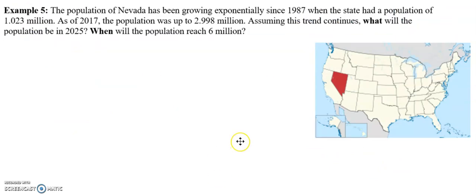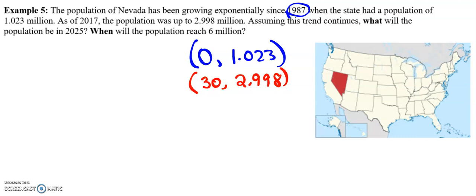Due to time constraints, we're going to set this one up, but then I'm going to do example six in a different video because that one is something called Newton's Law of Cooling, which is similar but slightly different. So let's pull out our important information about the population of Nevada. So 1987 is what I'm going to call time zero. We had a population of 1.23 million. As of 2017, which would be 30 years later, we're at 2.998. We eventually want to know what will the population be in 2025. Well, 2025 in relation to 1987 is 38 years later. Also, we want to know when will the population equal 6 million.